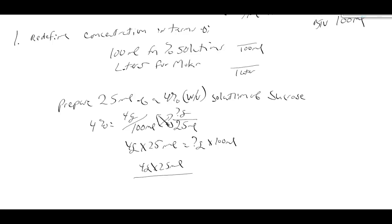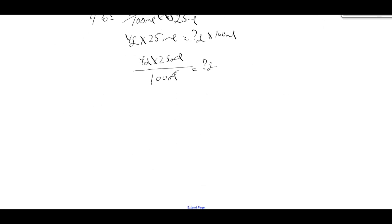So 4 grams times 0.25 is equal to 1 gram.